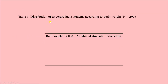Here we have put the row heading and the column heading. The column headings are 'number of students' — that means the frequency — and 'percentage.' In this part we also mention the different body weight ranges: 40 to 50 kg, 50 to 60 kg, 60 to 70 kg, etc. These form the rows, which is why this part is the row title.